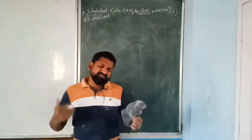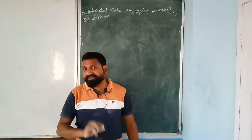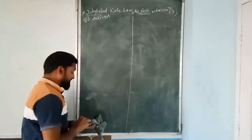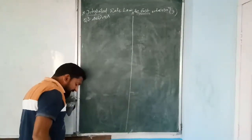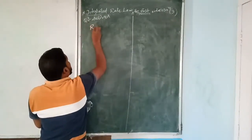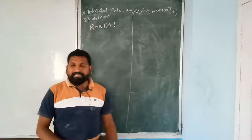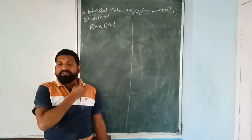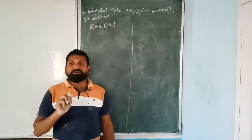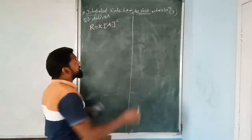For the first order reaction, the rate law is R = k[A]. This tells us it is a first order reaction because A has an exponent of one. Let A give product — this is your first order reaction. By rate law: R = k[A], where [A] is the molar concentration of A.